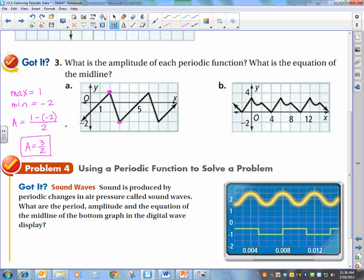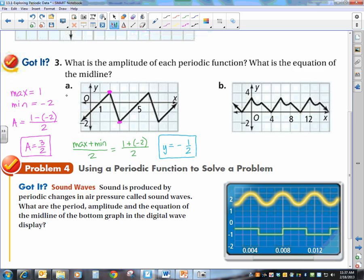My midline says I'm going to do the max plus the min over 2. So in this case I'm going to do 1 plus negative 2 over 2. And so that gives me a midline. It's an equation so you have to have y equals, y equals negative 1 half. And hopefully you can see that is about right here on the graph and that looks like it's halfway between your max and min values.